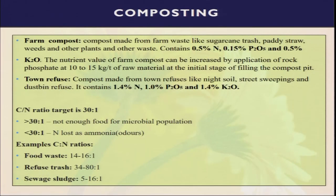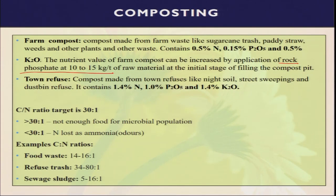Farm compost made from farm waste like sugarcane trash, paddy straw, weeds, and other plants contains about certain amounts of NPK. The nutritive value of farm compost can be increased by application of rock phosphate at 10 to 15 kg per ton of raw material — this is called enriched compost. In organic farming, we cannot use any inorganic fertilizer, but we can use rock phosphate because it is directly dug from the soil with no chemical process involved. By applying some rock phosphate, our decomposition process will be faster and the compost will be enriched.